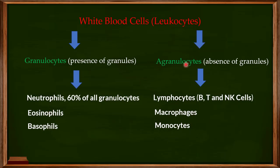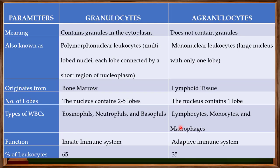These are the granulocytes with their important examples, and these are the agranulocytes with their important examples. The first major difference between the two is that granulocytes contain granules in the cytoplasm. We will dive deep into the components of these granules when discussing each type — eosinophils, neutrophils, and basophils — in those specific videos. Agranulocytes do not contain any granules in their cytoplasm.